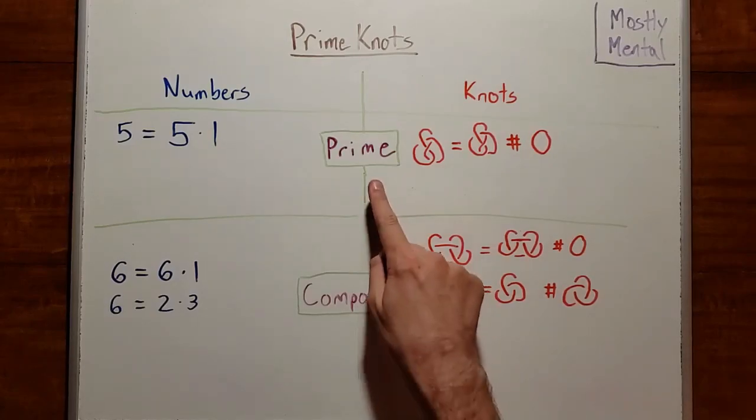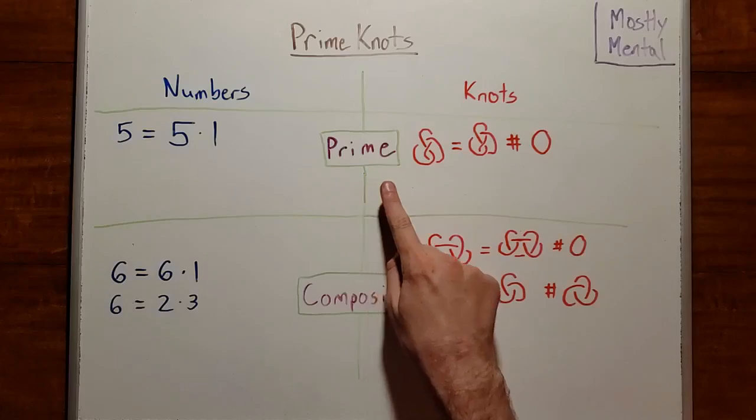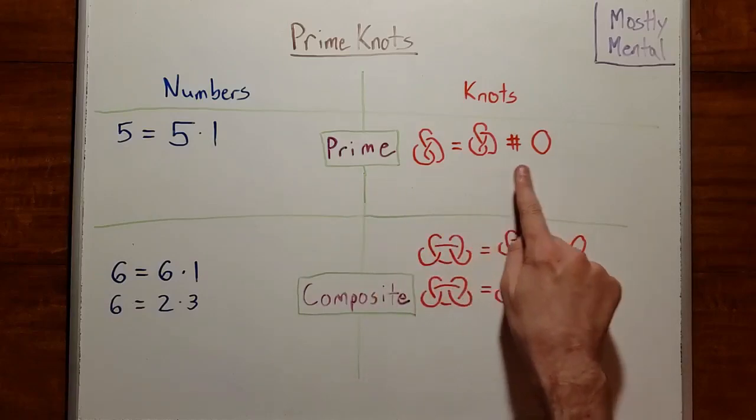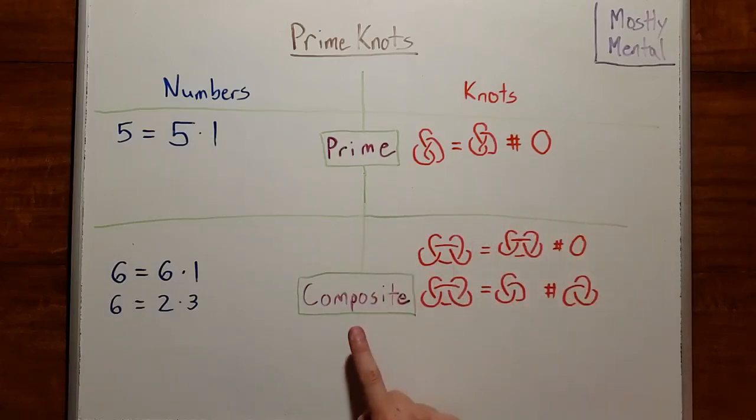And that's exactly how we'll define them. We'll say that a knot is prime if it can only be written as the sum of itself and the unknot. And it's composite if it's the sum of two simpler knots.